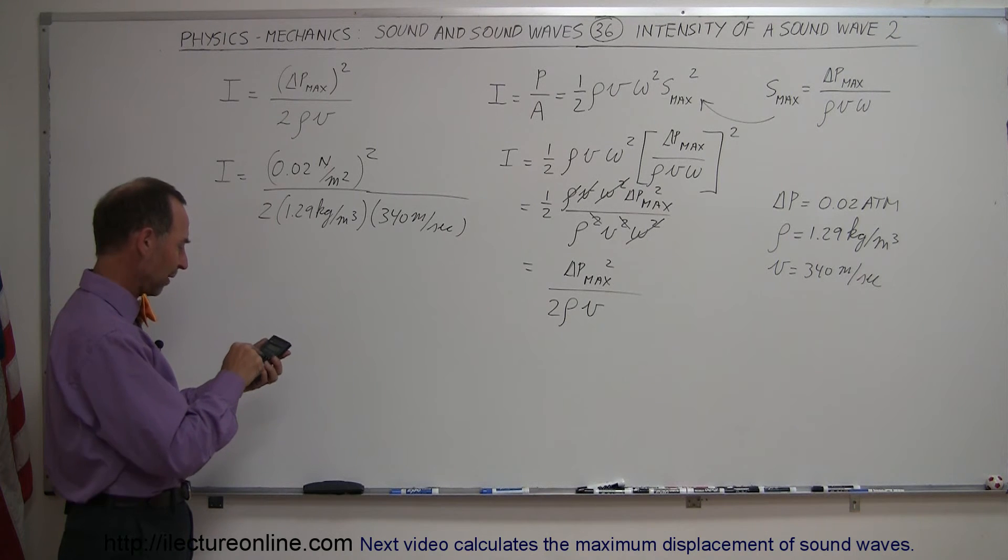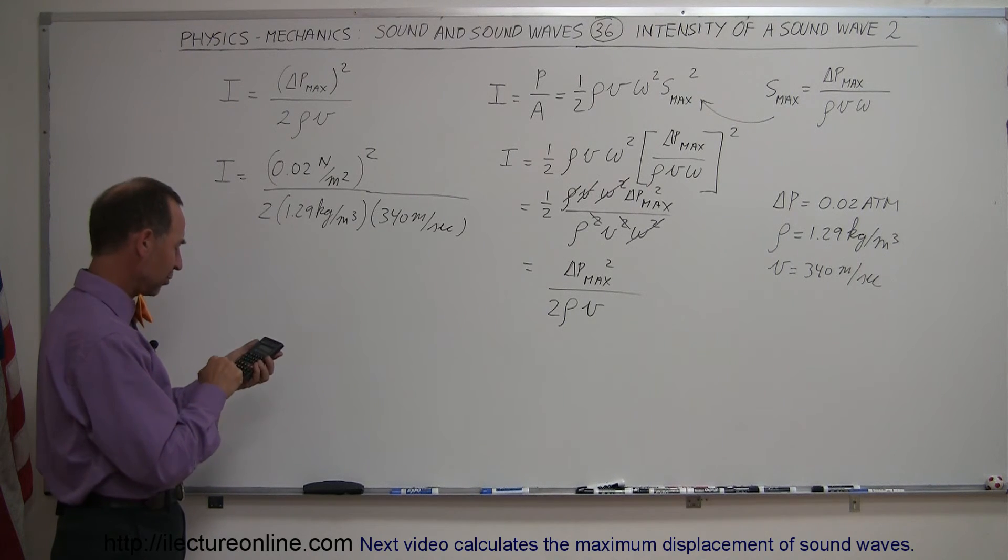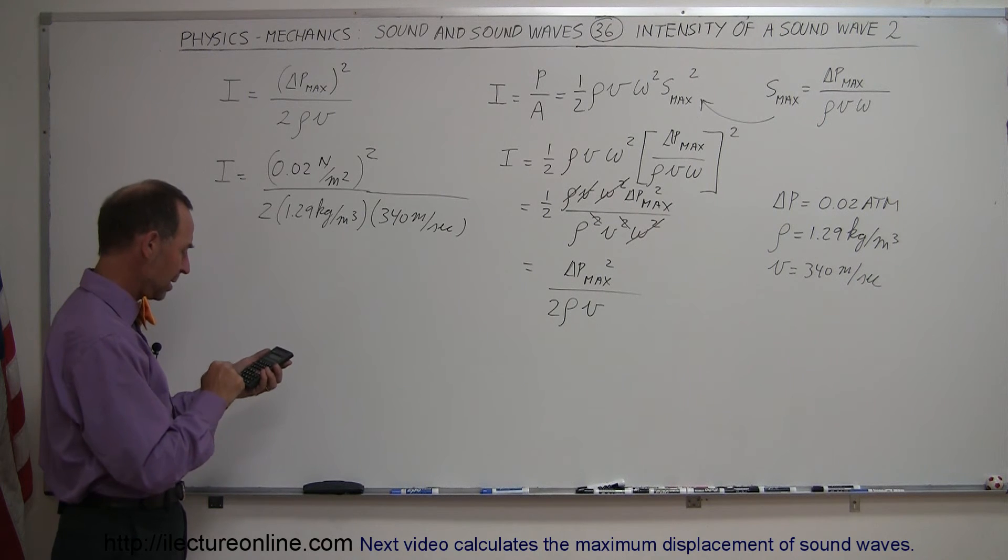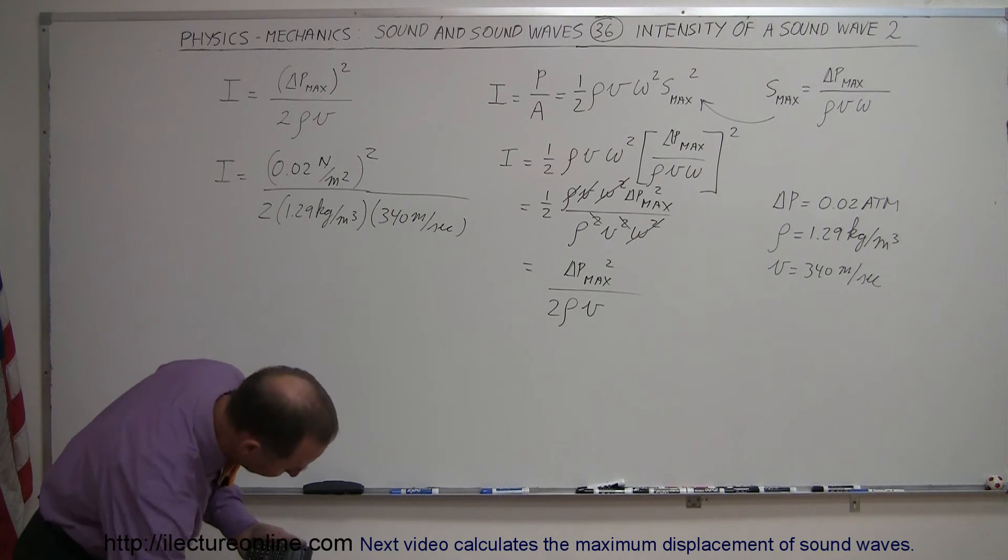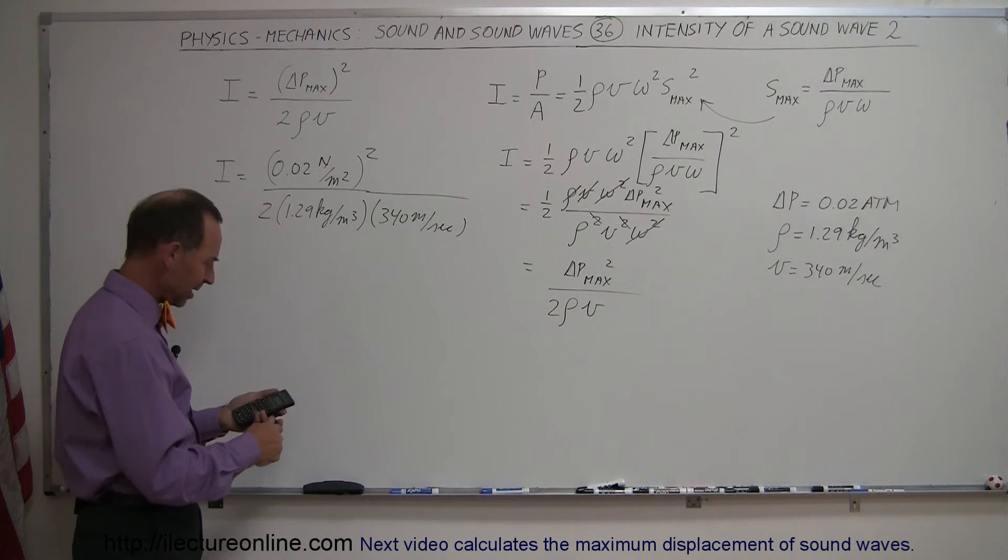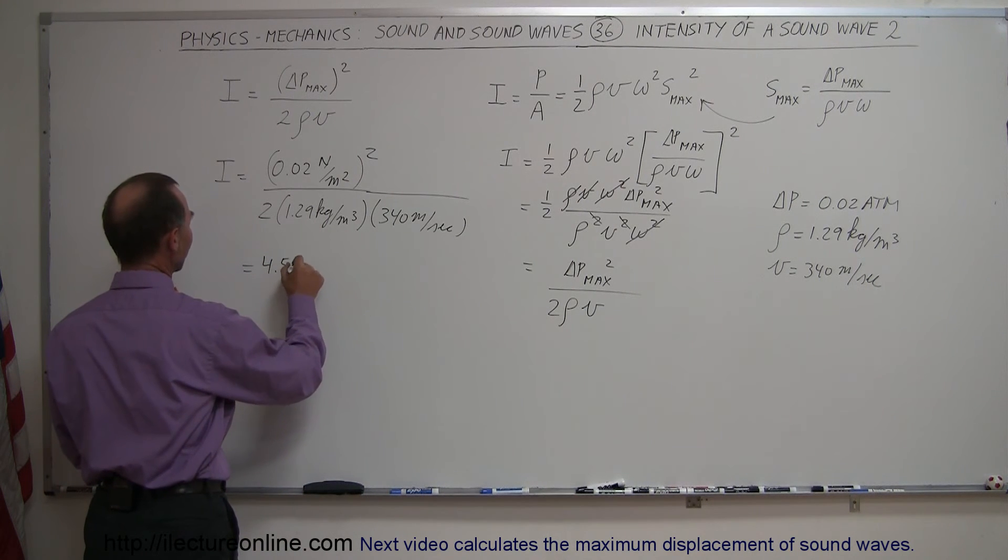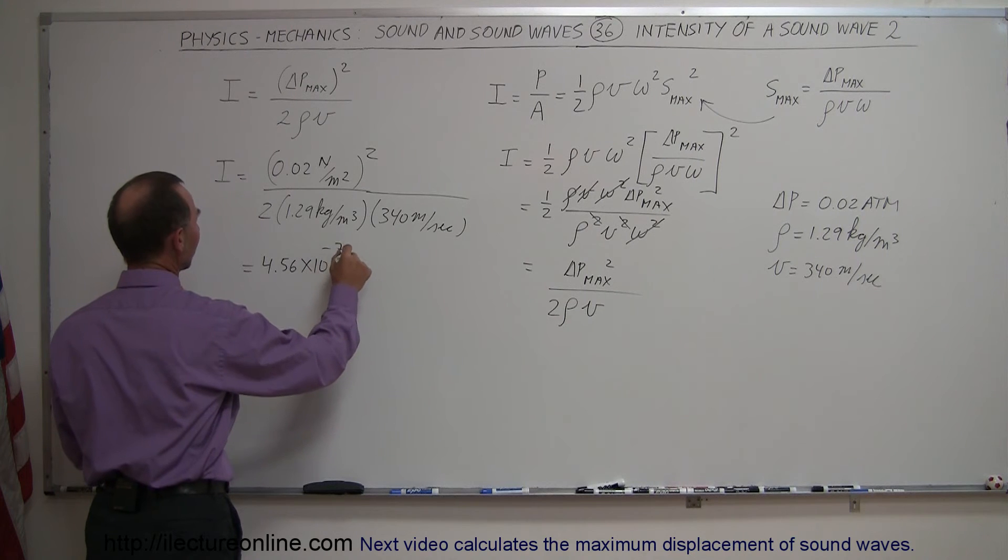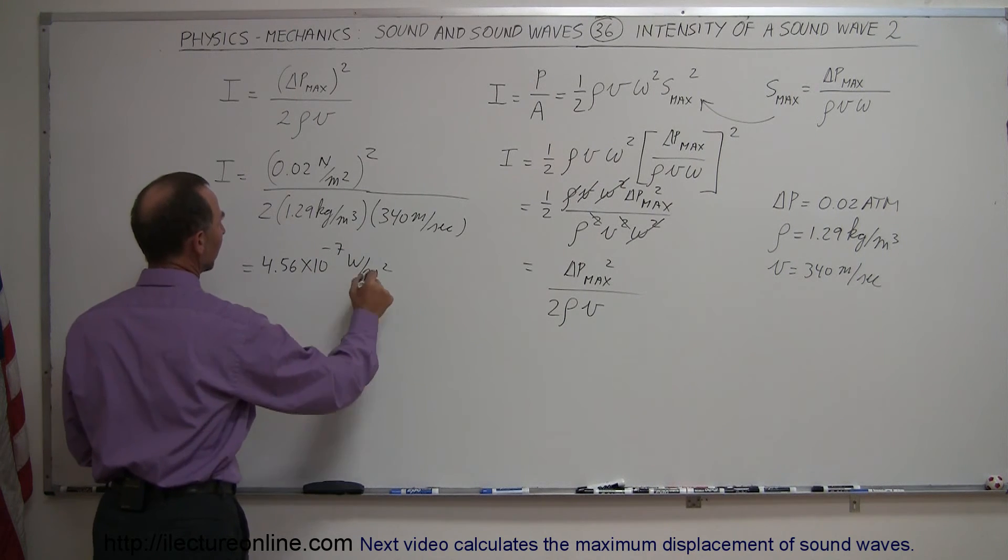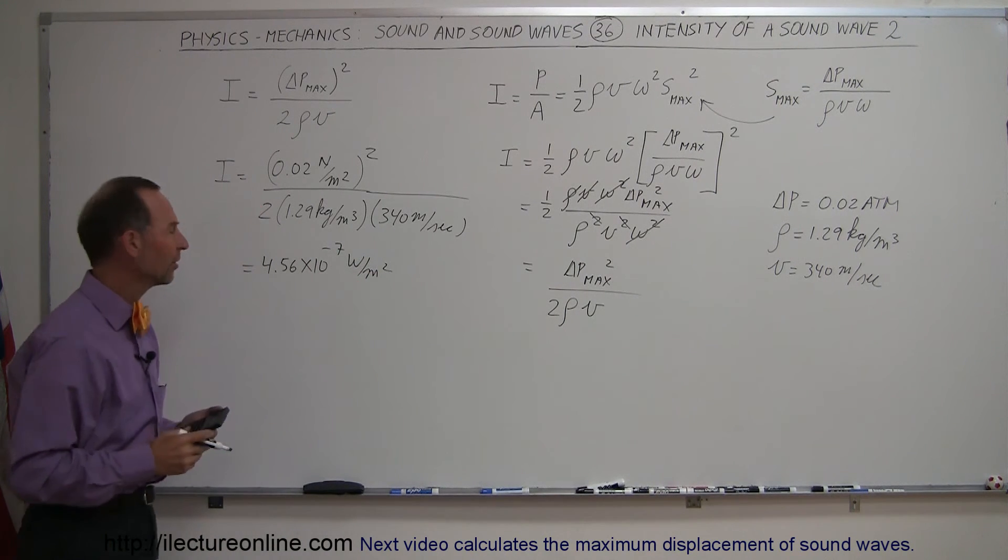Let's do that. 0.02, we have to square that, divide by two, divide by 1.29 and divide by 340, and this will give me intensity of 4.56 times 10 to the minus 7 watts per square meter, which again seems like a reasonable sound intensity.